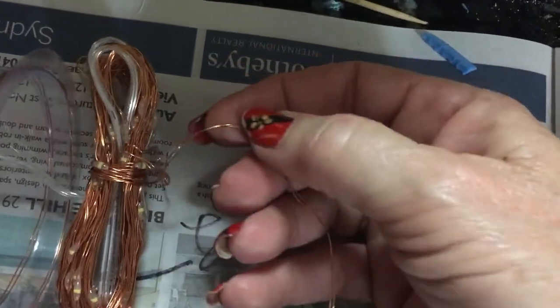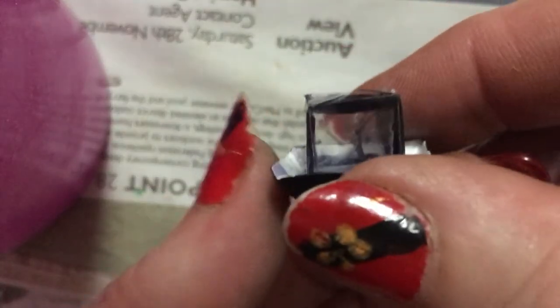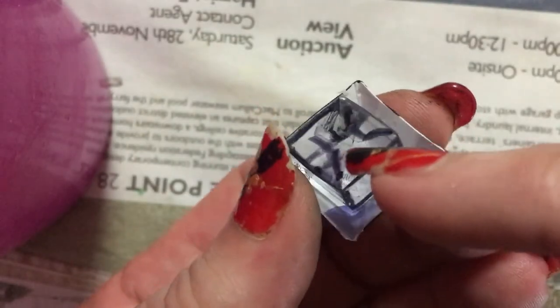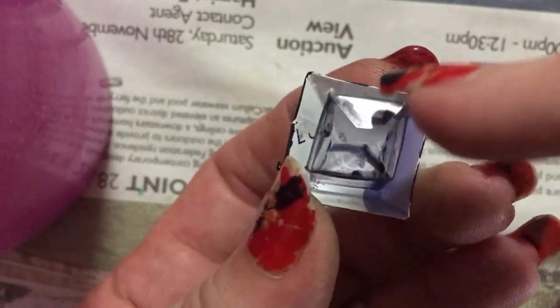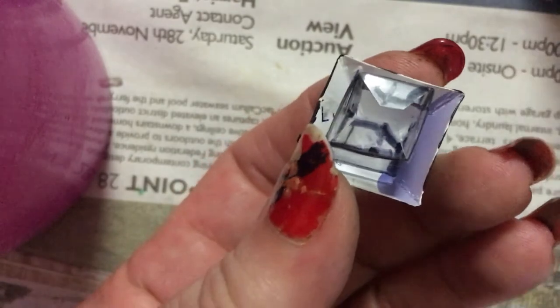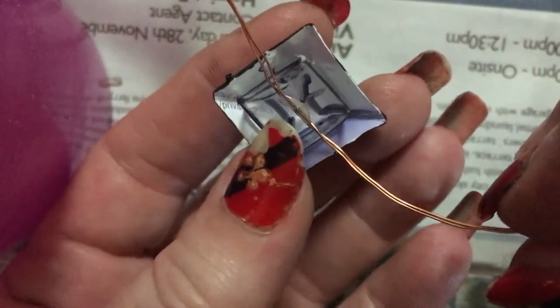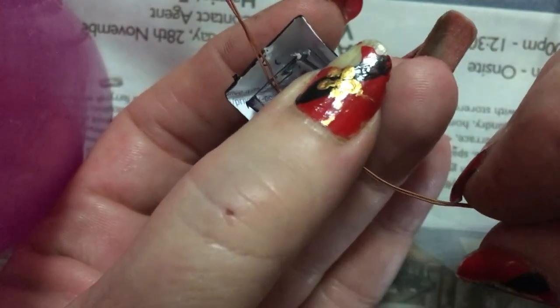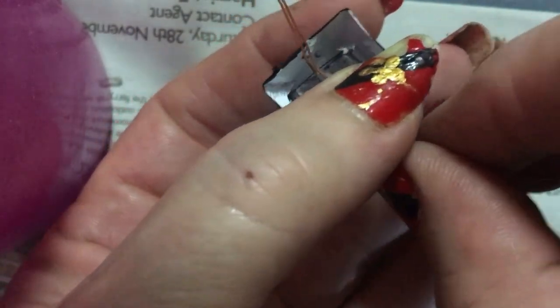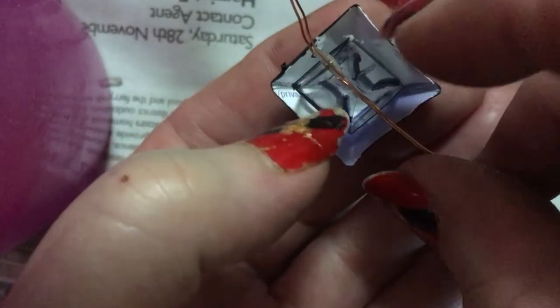So when you have a look at your little light, you'll notice that the little tabs go there and there. So what you want to do is when you put in the fairy light, you want to go between those tabs so that when it's glued down, the fairy light is still in the middle but it's not being glued.